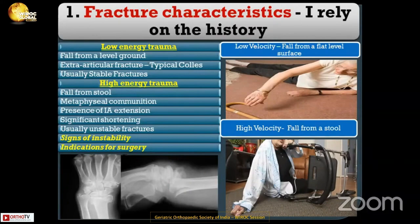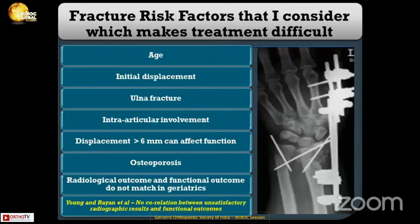For fracture characteristics, I rely on the history. If it's a low-energy trauma — a fall from level ground — the fracture is usually extra-articular, typical Colles, and stable. Whereas in higher energy trauma, like a fall from a stool, there is metaphyseal comminution, intra-articular extension, shortening, and it is usually an unstable fracture. Signs of instability form an indication for surgery.